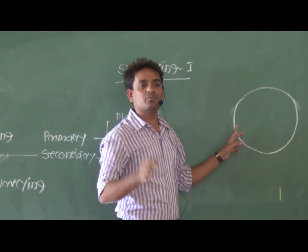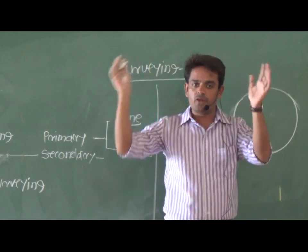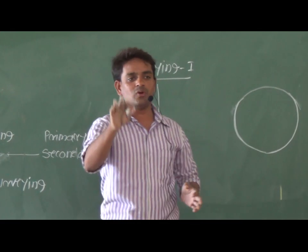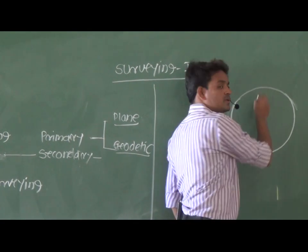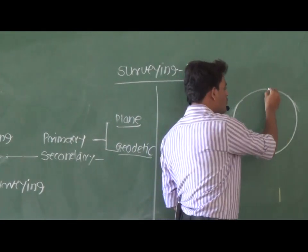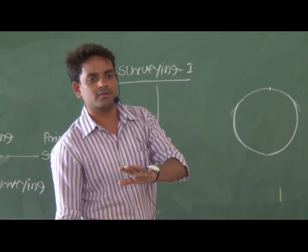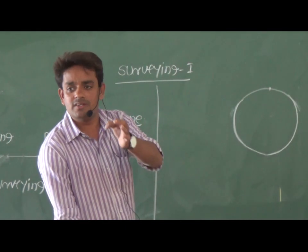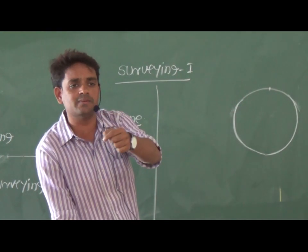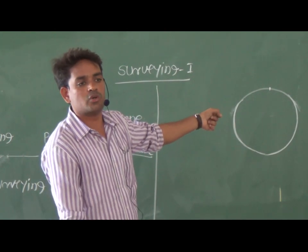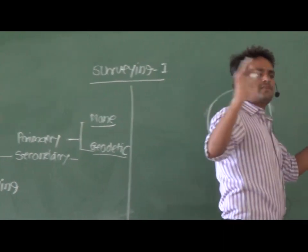What is the length of this classroom? It is very negligible with respect to the perimeter of Earth's surface — the length of this classroom is negligible. In this case, suppose I am going to measure the distance, whether I have to consider the curvature of the Earth or not. Because compared to the perimeter of the Earth's surface, it is very negligible, so there is no need to consider the curvature of the Earth's surface.